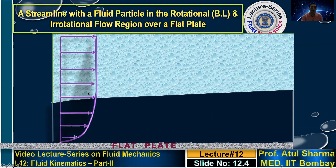This is an external flow problem where, far away, the velocity is the free-stream velocity, and near the wall there is a velocity gradient. We define a boundary layer as a thin layer in which there is a velocity gradient. The edge of the boundary layer is defined by the height at which the velocity is 99% of the free-stream velocity. The boundary layer edge at different axial locations is shown by a line.